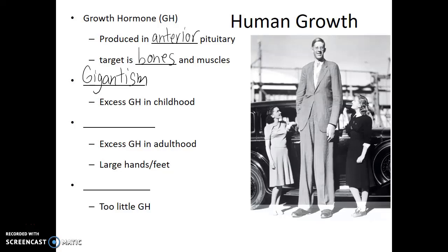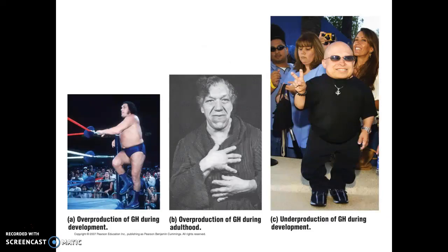Gigantism is a condition where excess growth hormone is produced and released during childhood. Acromegaly is an overproduction of growth hormone in adulthood. The difference between the two: if growth hormone is produced in excessive amounts during childhood, before the long bones have had a chance to ossify, the individual will be incredibly tall. Overproduction after the long bones have ossified will still result in some growth, but primarily in the hands and feet, and facial features such as the chin, nose, and ears. Dwarfism, on the other hand, is a condition in which there is an underproduction of growth hormone.